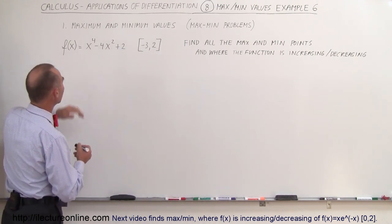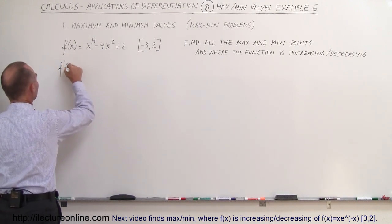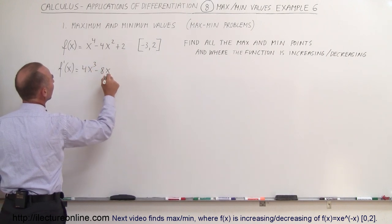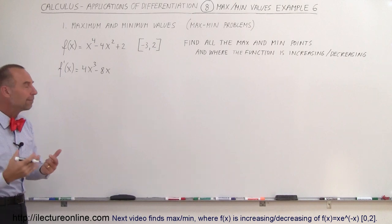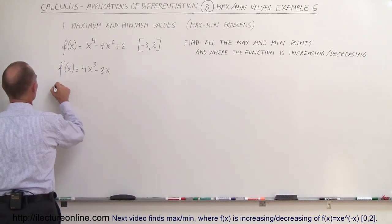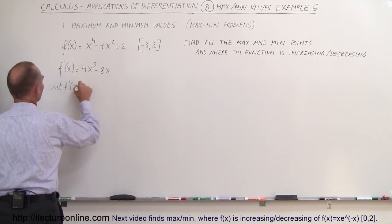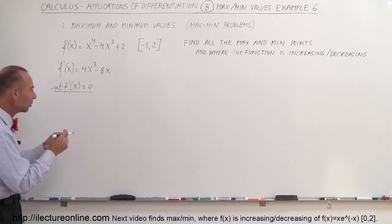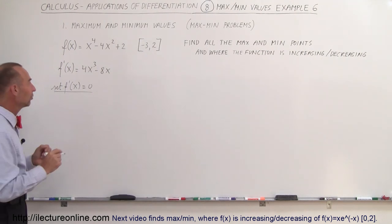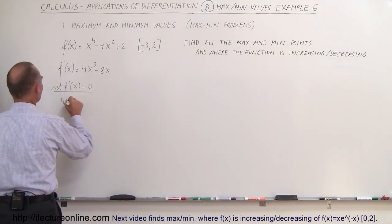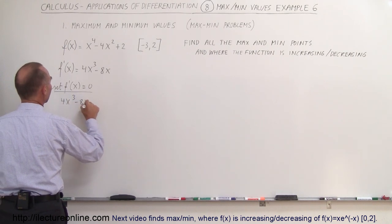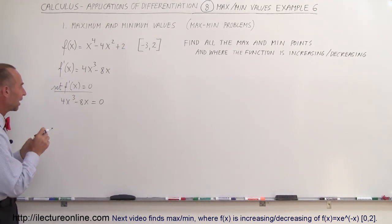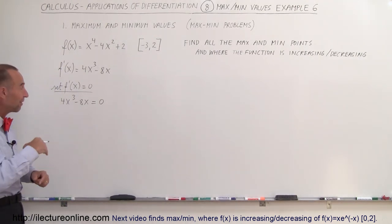First of all, we're going to find the derivative of this, so f prime of x is equal to 4x cubed minus 8x. Then we're going to set that equal to zero to find the maximums on the equation. We set f prime of x equal to zero — we know it is not actually equal to zero, we just set it equal to zero to find the max and mins. So we set the derivative equal to zero and solve for x; those x values are the coordinates of the points where we find max and mins.